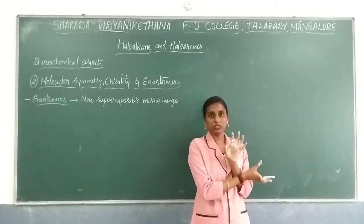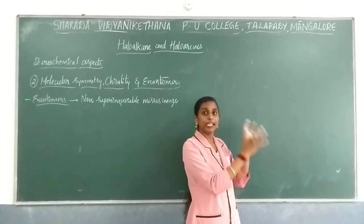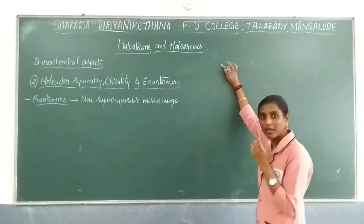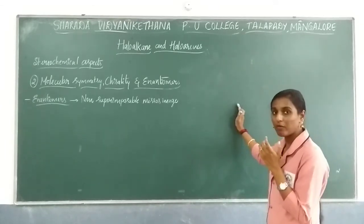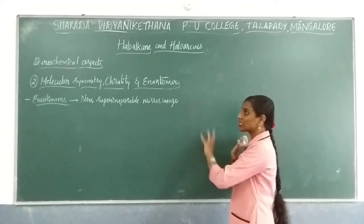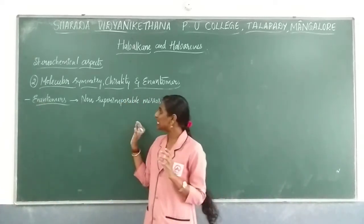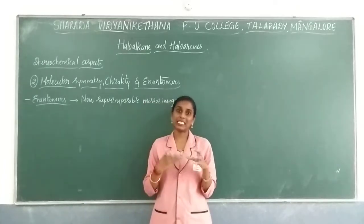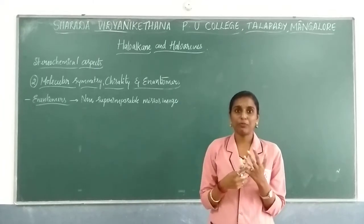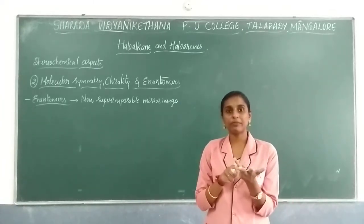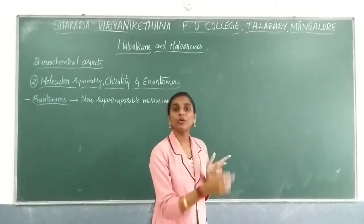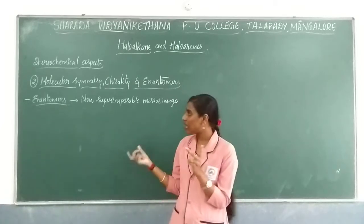Any compound may have a mirror image structure, but if it is non-superimposable, then only it will be considered as an enantiomer. Between two structures, the mirror image will be formed. When you get the mirror image, the structure you get is non-superimposable — those kinds of structures are considered enantiomers. Enantiomers can be seen in terms of a mixture. Optical active compounds are nothing but asymmetric compounds — only asymmetric groups will show optical activity, rotation to the right side as well as left side. Those are chiral molecules because you get a non-superimposable mirror image, and those are enantiomers.